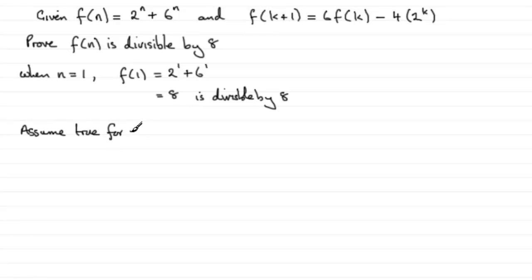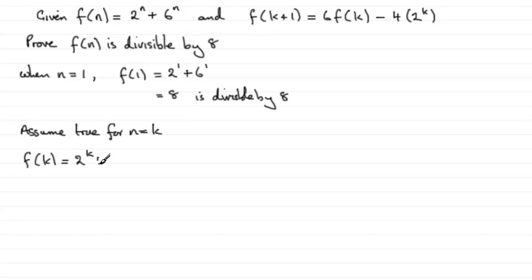Now we assume true for n equals some particular value which we'll call k. So assume true for n = k — in other words, f(k) = 2^k + 6^k is divisible by 8.